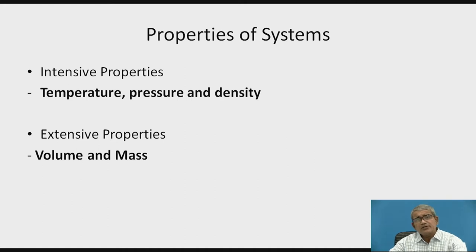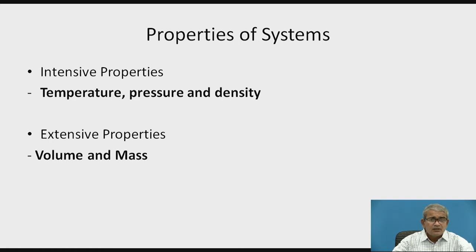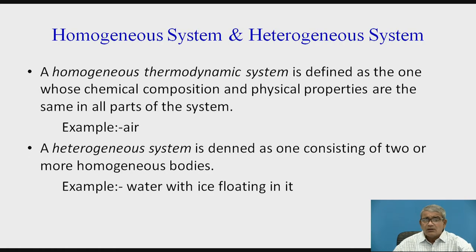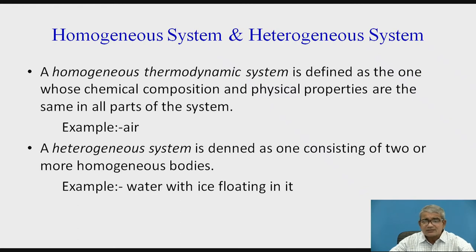In the extensive properties of that system, they are dependent on the size and mass of that system. It should be noted that the ratio of two extensive properties gives either a homogeneous or heterogeneous one. A homogeneous system in thermodynamics is defined as one whose chemical composition and physical properties are the same in all parts of that system — for example, air.